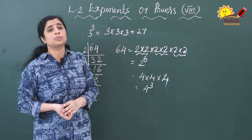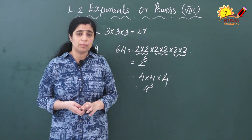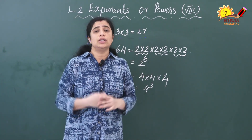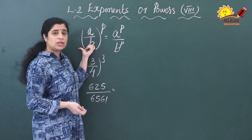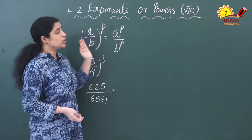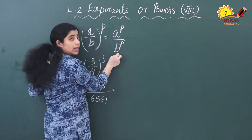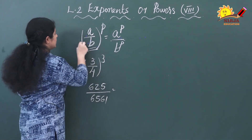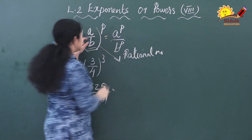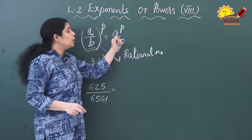Now we will apply this exponential form for rational numbers. Already in the first chapter we learned about rational numbers. Now we will apply the laws of exponents for rational numbers. The general formula is: a by b whole raised to p is equal to a raised to p divided by b raised to p.